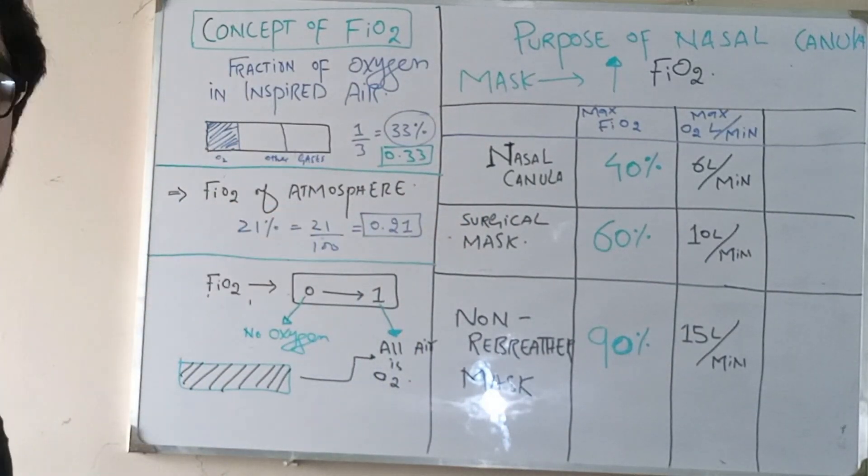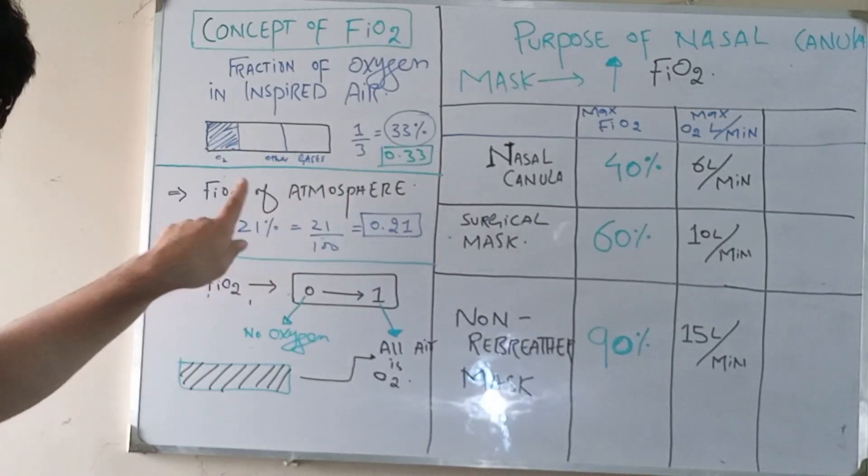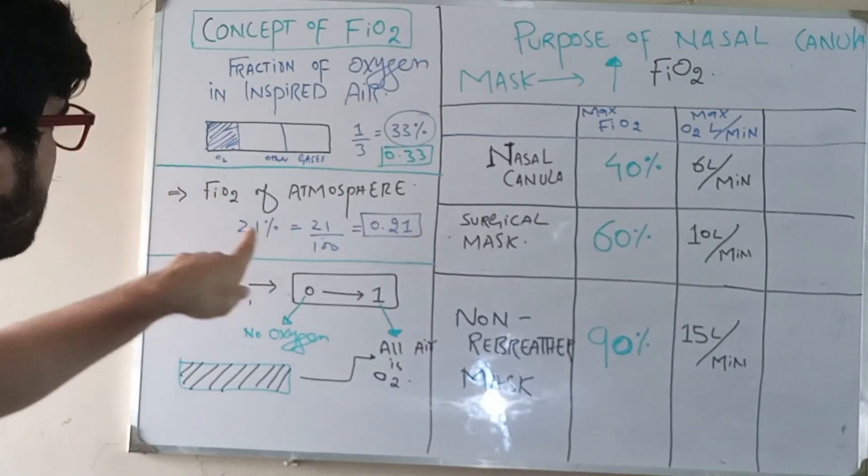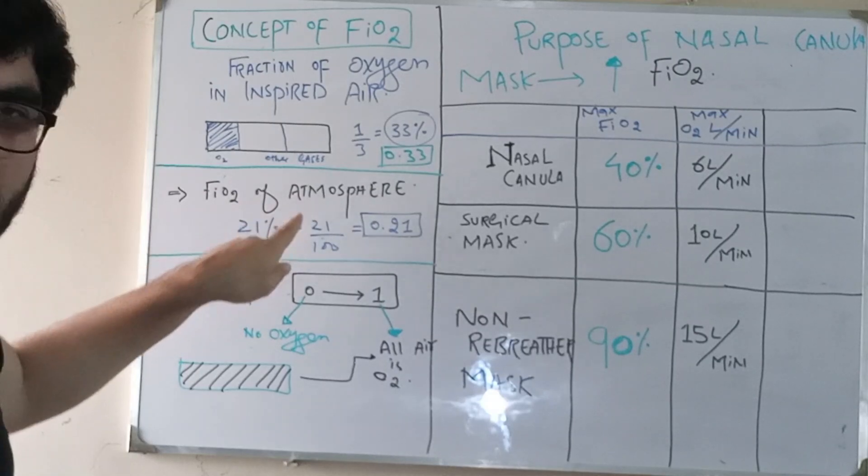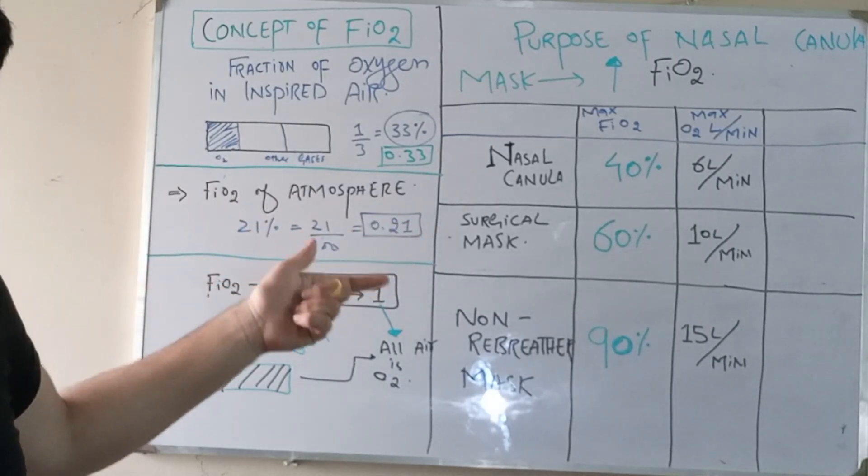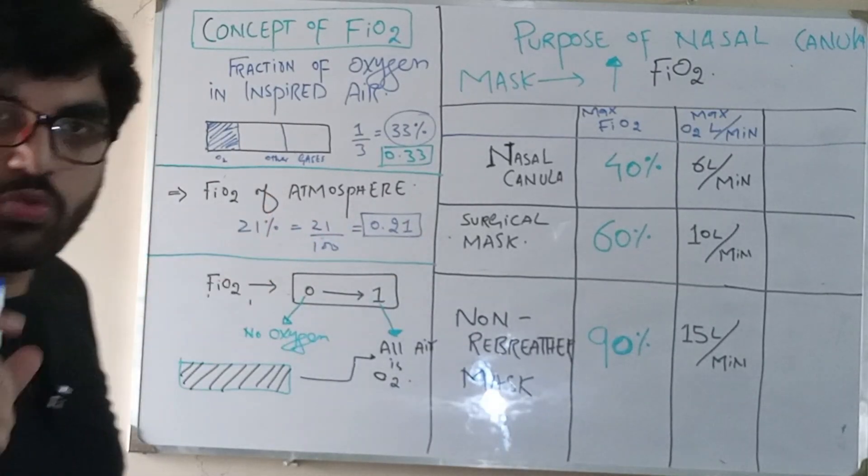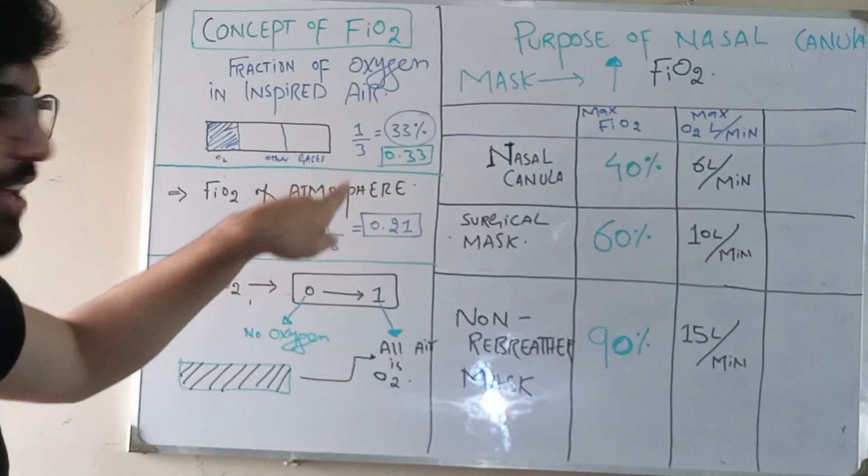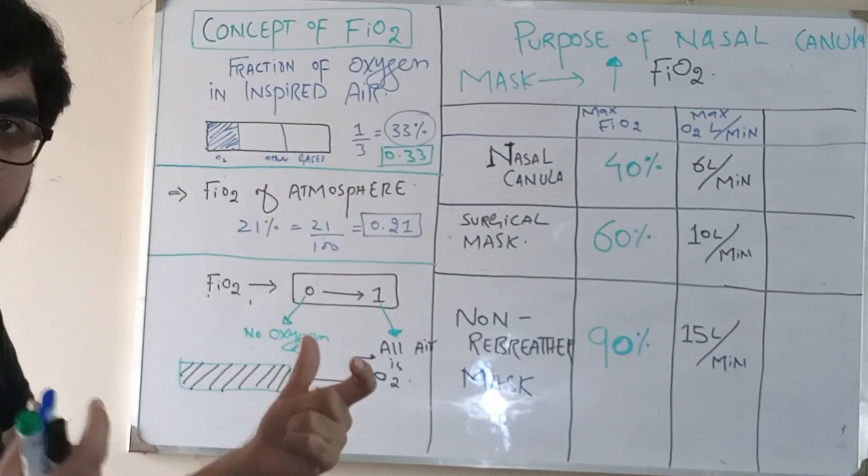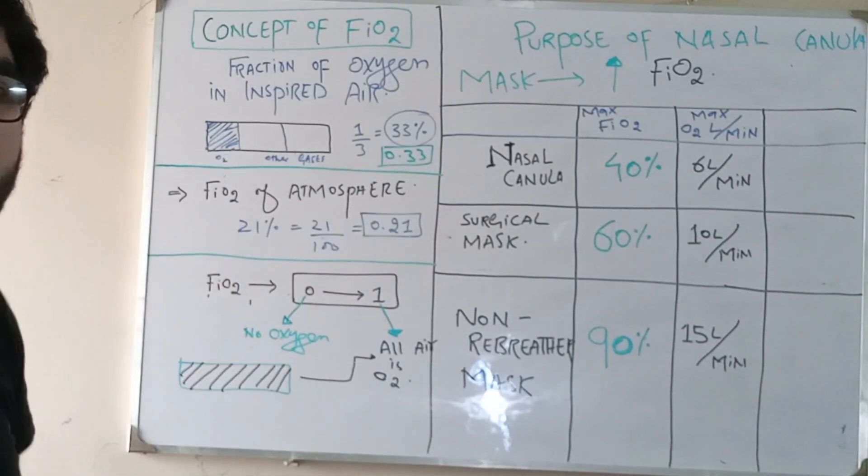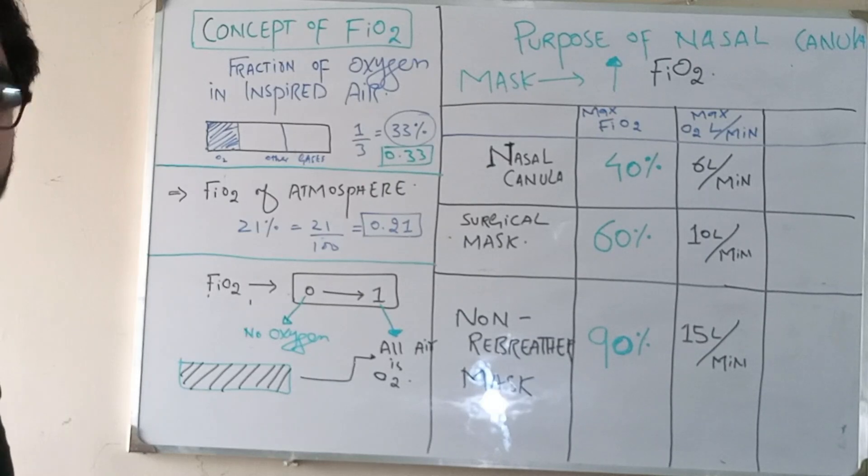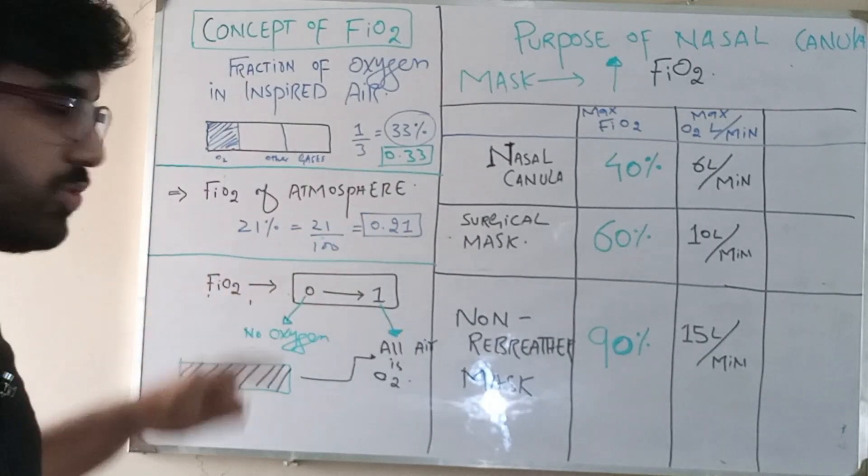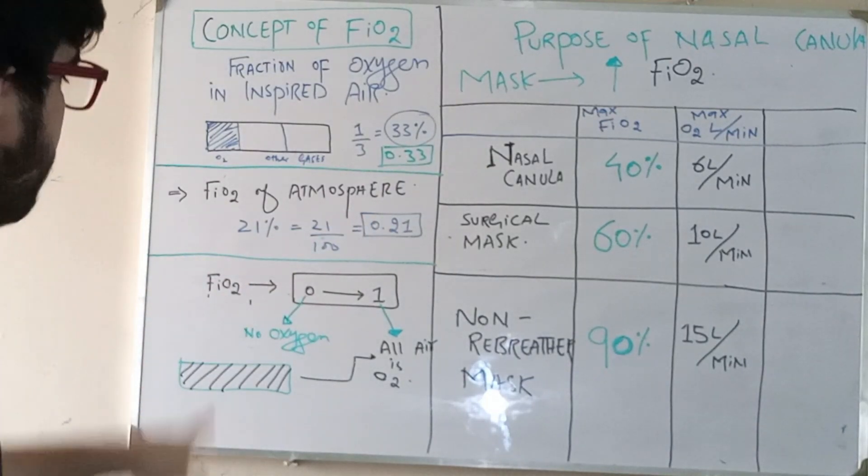So twenty-one by hundred, so 0.21 - the FiO2 of atmosphere. This is the fraction of oxygen in the present or in the given amount of atmospheric air. Now the values of FiO2 range from zero to one.